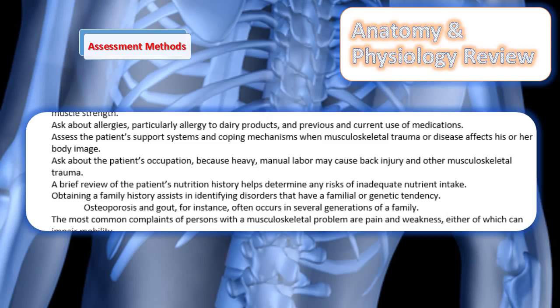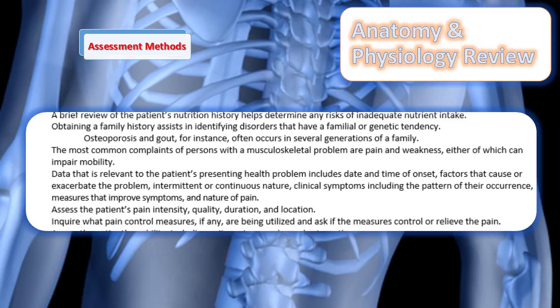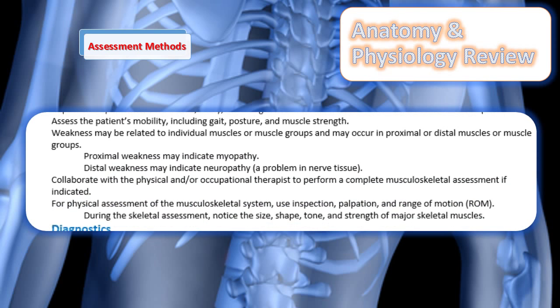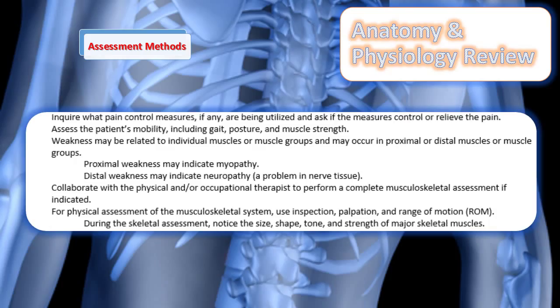Ask patients about their job and whether they do manual labor that could put them at risk for injury. Ask about nutrition and what they are eating at home. Obtain a family history and gather data related to their presenting problem — when it started, what causes it, what makes it worse, whether it is continuous or intermittent, and what manifestations they present with. Assess pain including intensity, quality, duration, and location. There are additional focused assessment items listed in your notes for the musculoskeletal system.